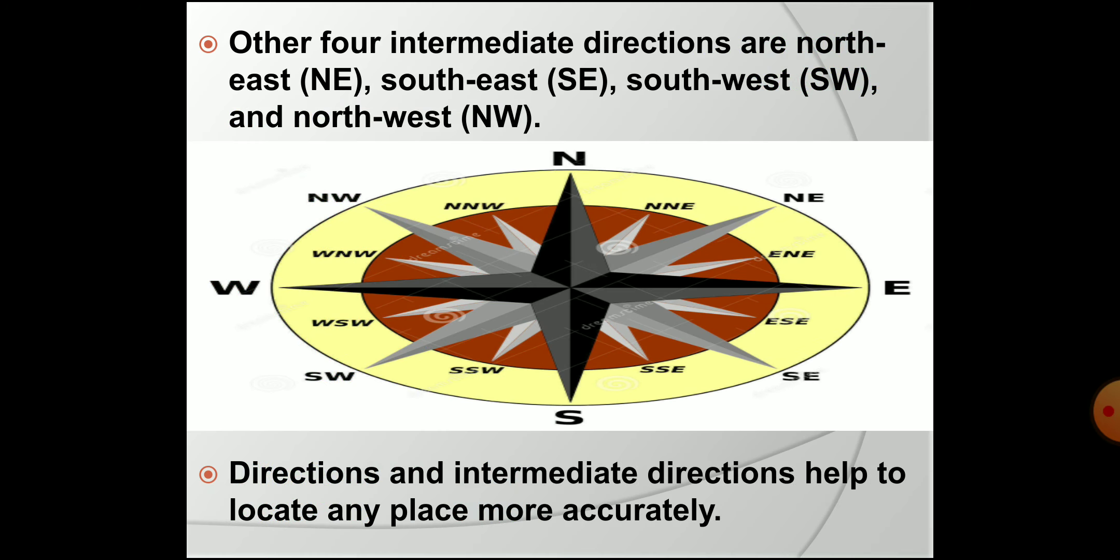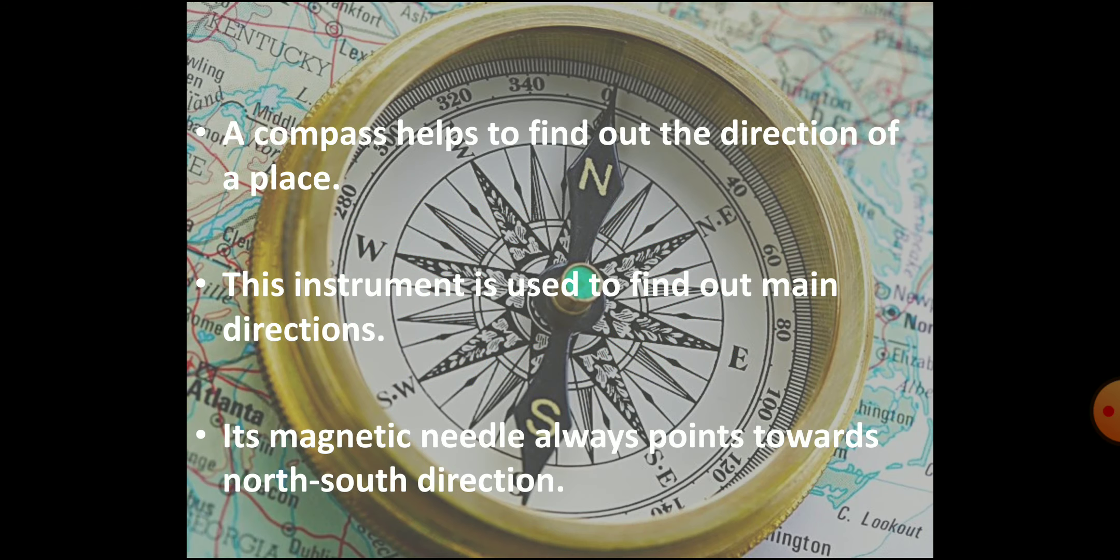Children, there are four intercardinal or intermediate directions as well. They are northeast (NE), southeast (SE), southwest (SW), and northwest (NW). With the help of these intermediate directions, it is quite easy to locate any place more accurately. To find out the direction of a place, an instrument or device called a compass is used. The magnetic needle of compass always points towards north-south direction. Therefore, all other directions relative to the north-south direction can be found out by using a compass. A compass helps sailors and mariners in navigation in seas and oceans.